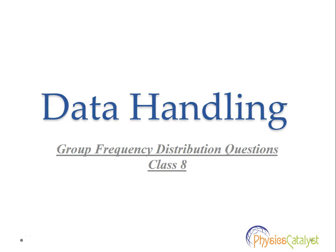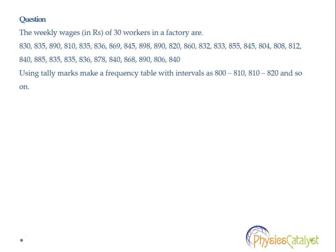Welcome students. Today we will be taking a look at group frequency distribution questions for the data handling chapter for class 8 maths. The problem statement is: the weekly wages in rupees of 30 workers in a factory are 830, 835, 890, 810, 835, and so on till 840. Using tally marks, make a frequency table with intervals 800 to 810, 810 to 820, and so on.